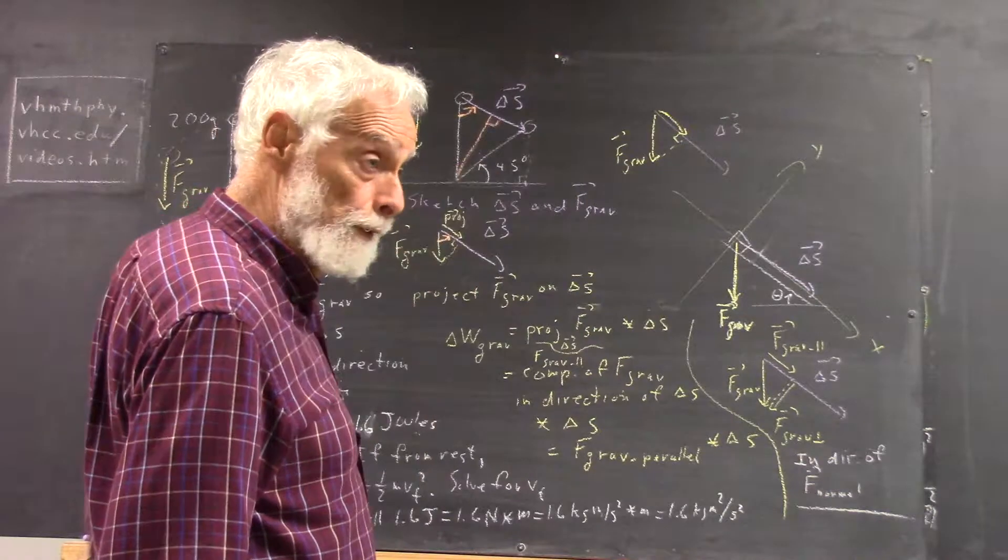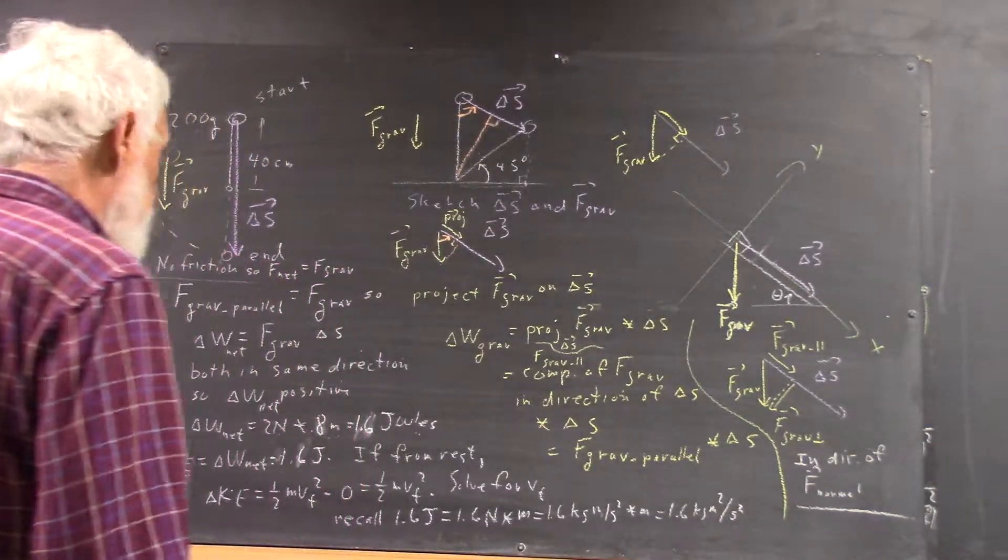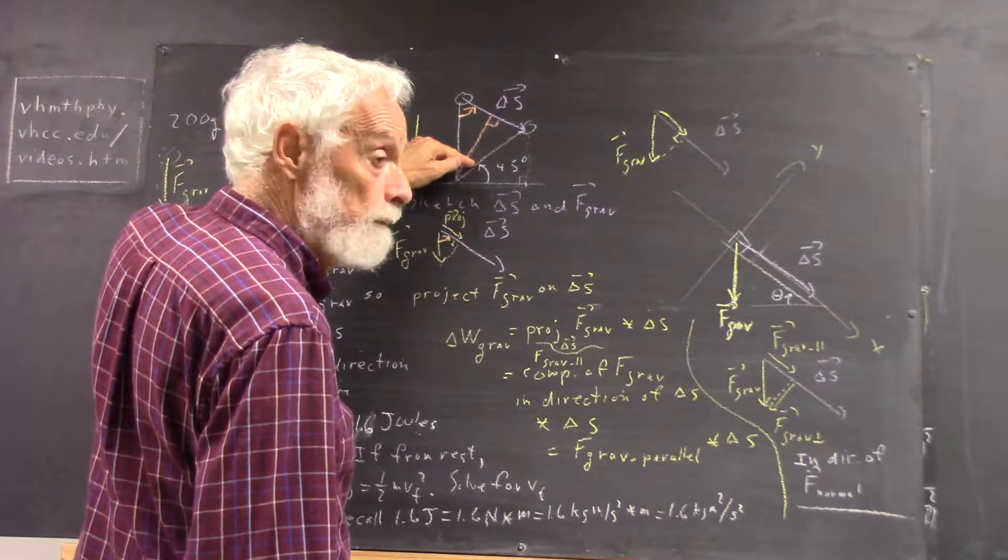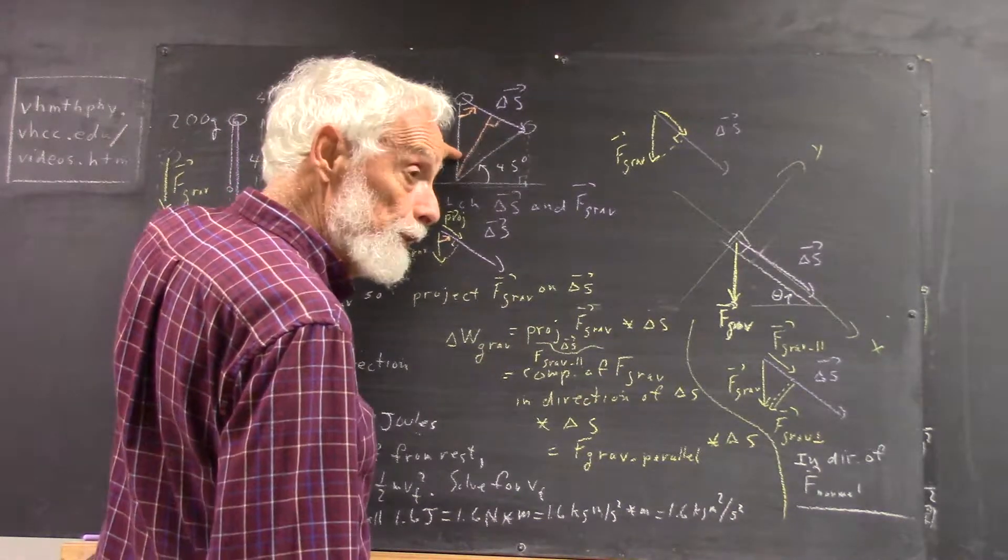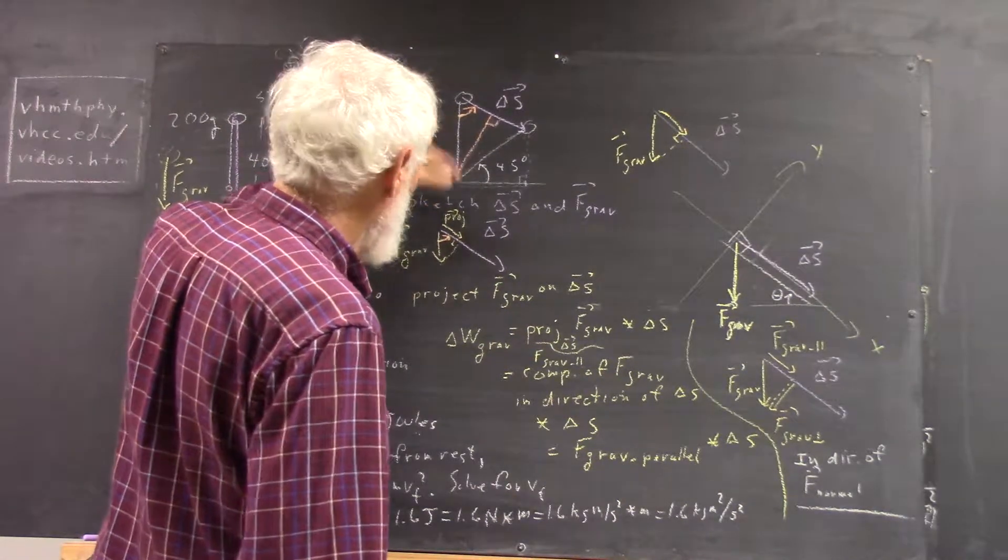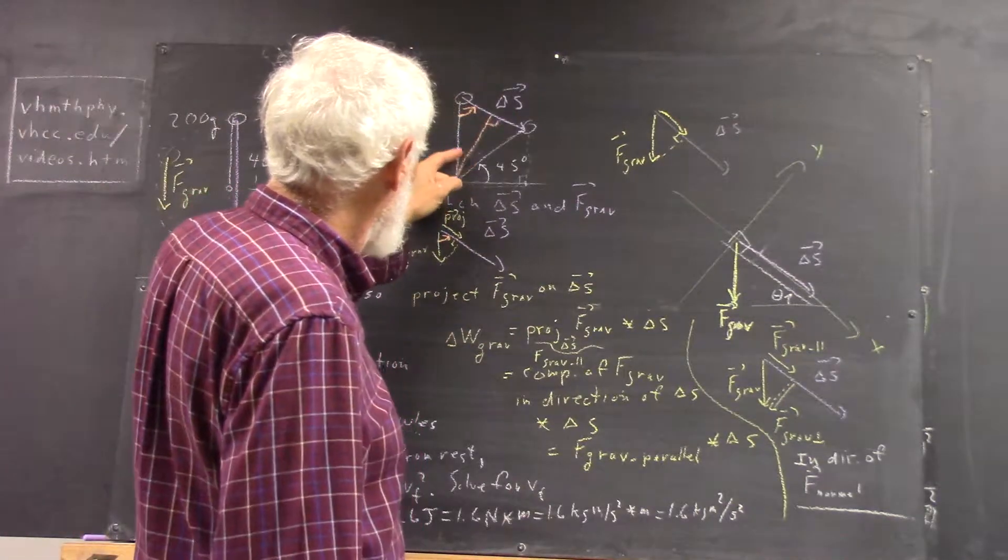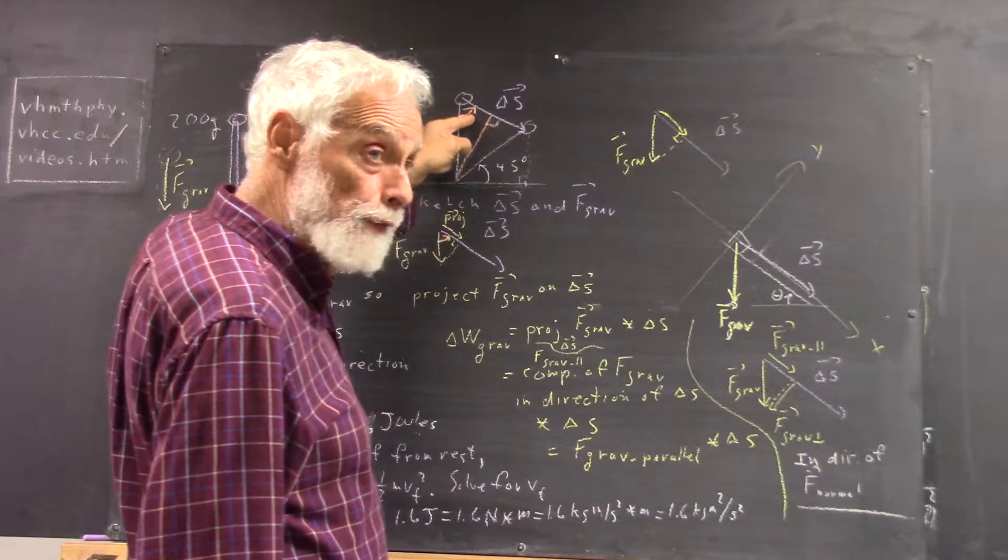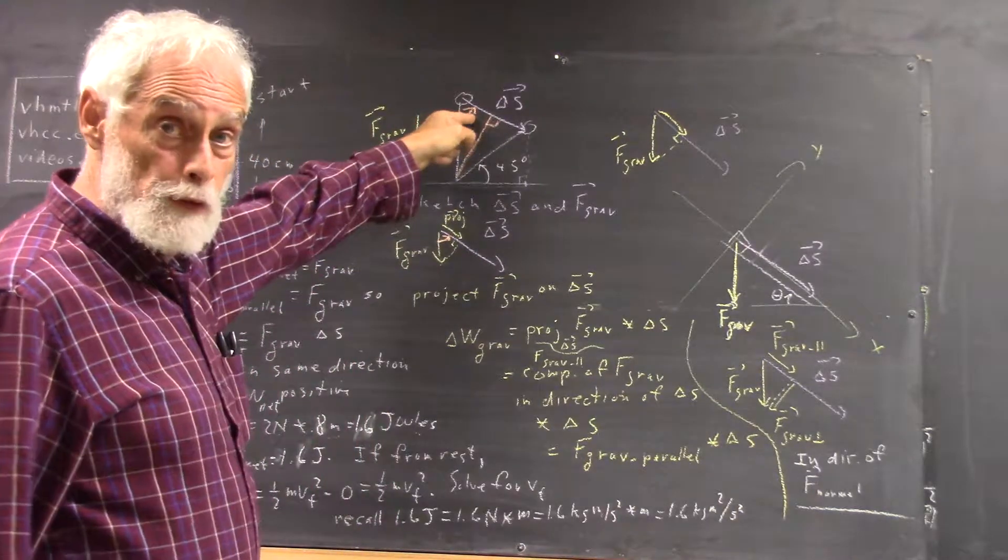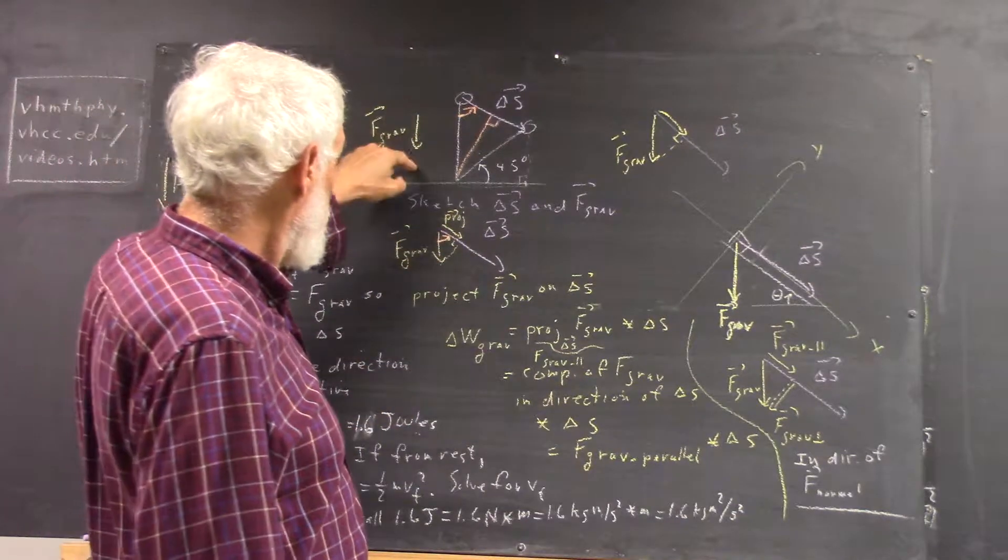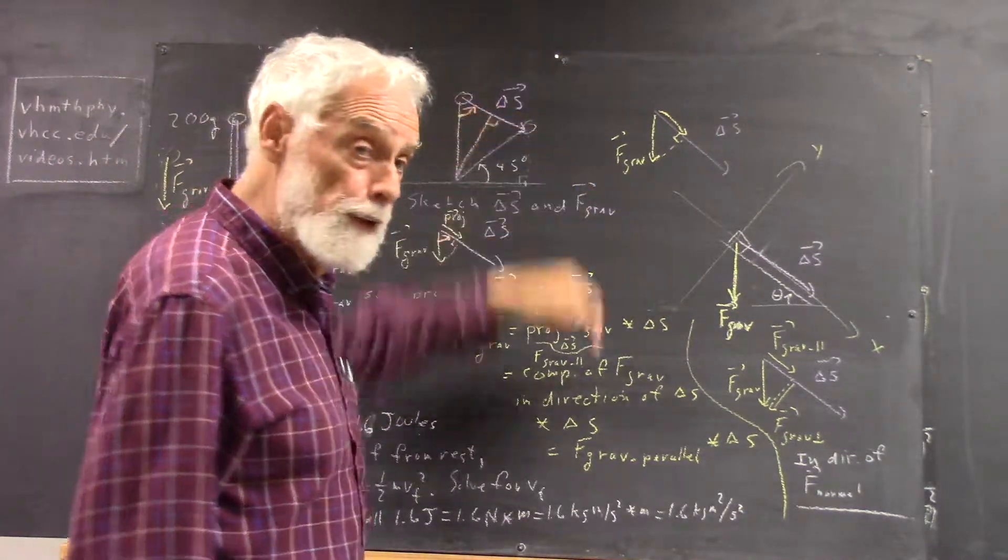It's 45 degrees from here to here. So you can figure out this angle here, which is the same as this angle here, by simple geometry. Think through the geometry of it. You can easily figure out this angle, which allows you to easily figure out this angle. Once you've figured out this angle, it's easy to figure out the projection of your gravitational force onto delta S.